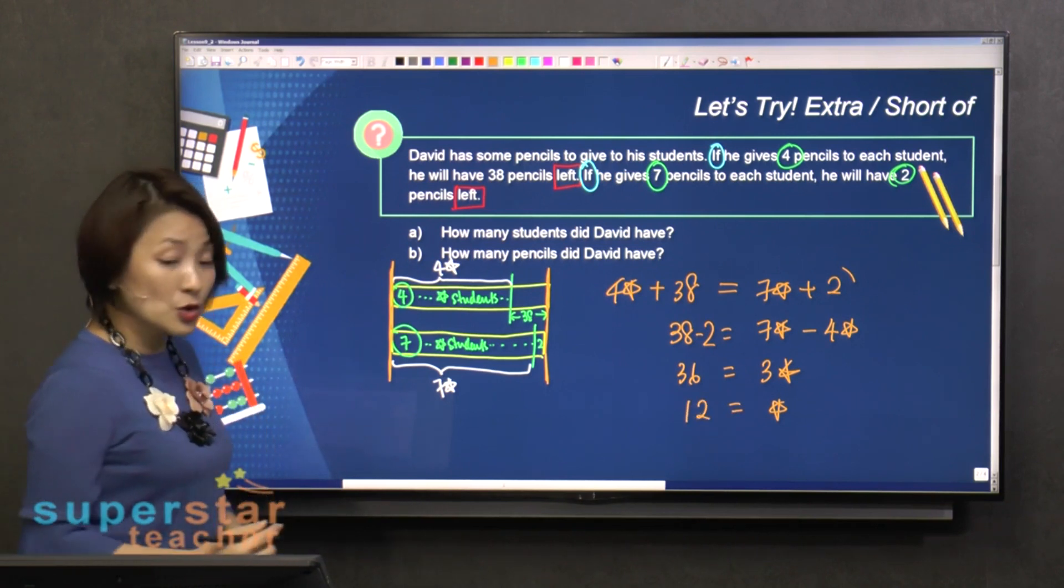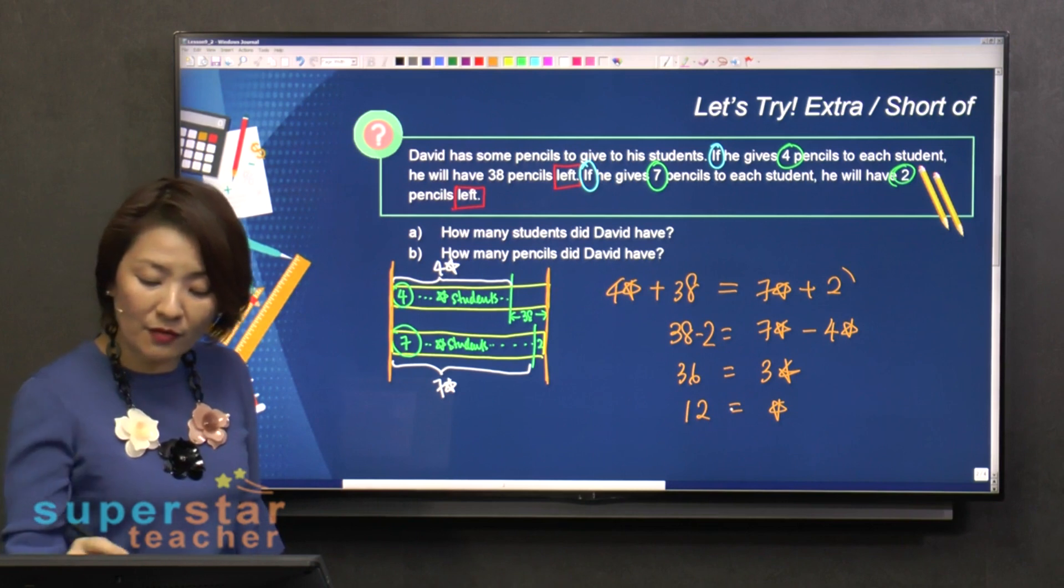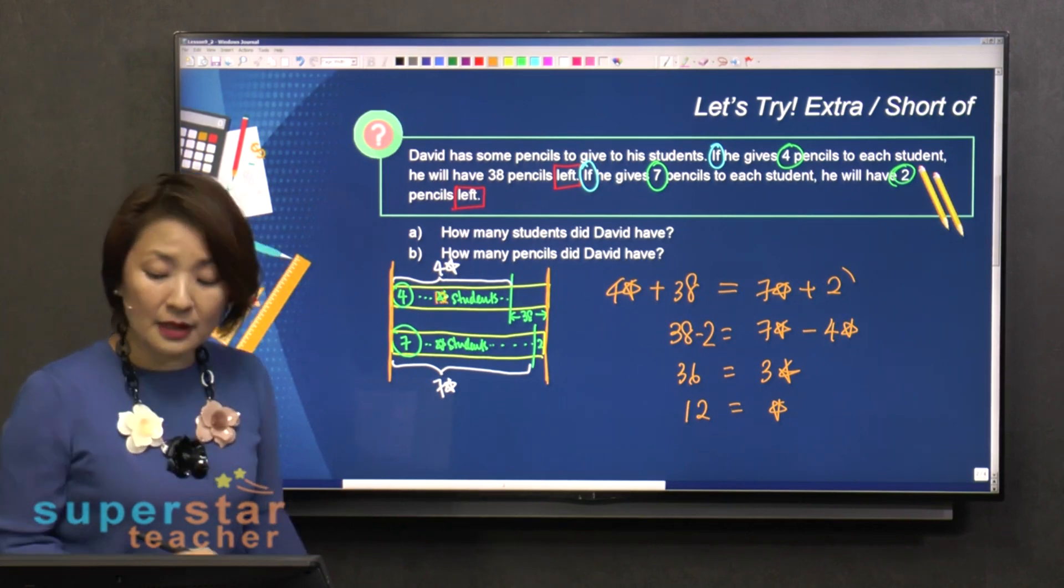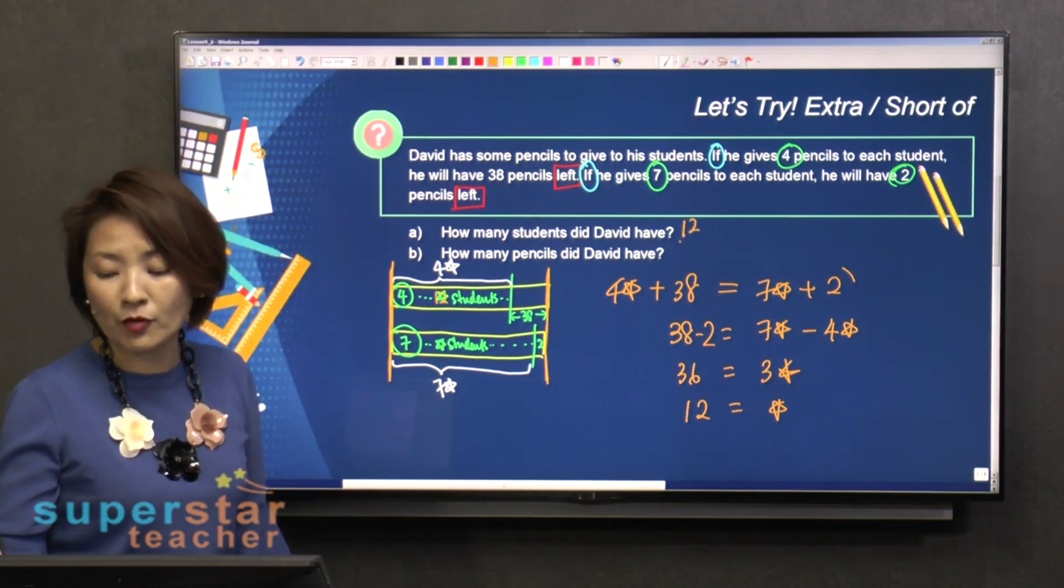Star will be 12. So if I fit this star equals to 12 inside here, I found out that there are 12 pupils.